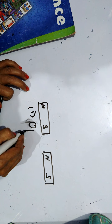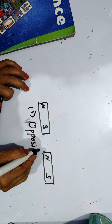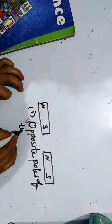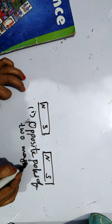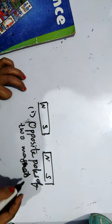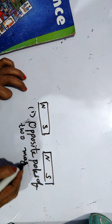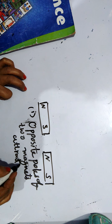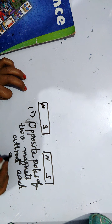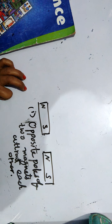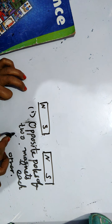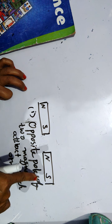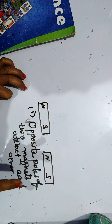You should write: opposite poles of two magnets attract each other. Attract — A, double T, R, A, C, T. So opposite poles of the magnet attract each other. This is the first property.